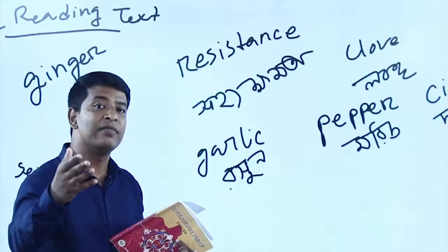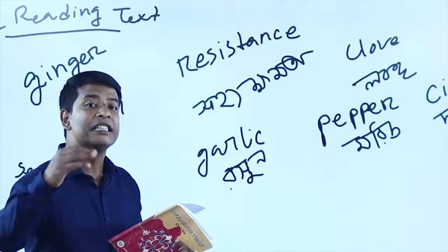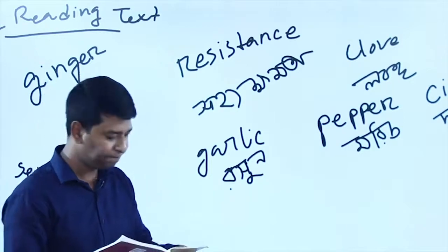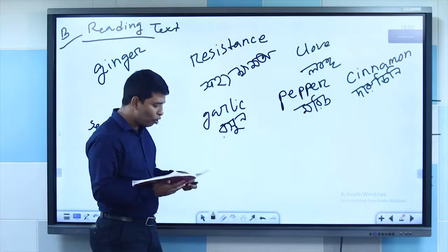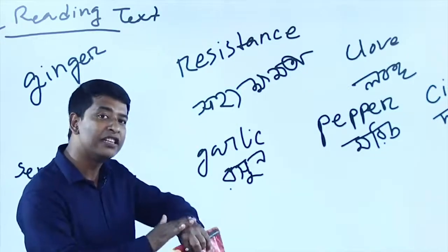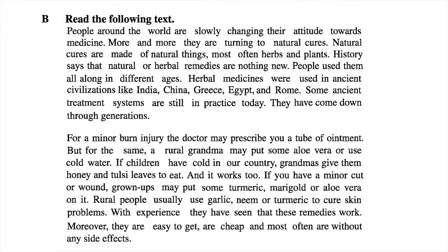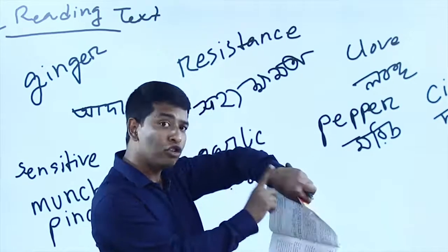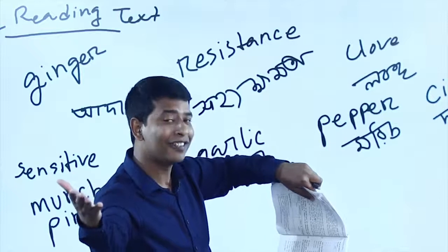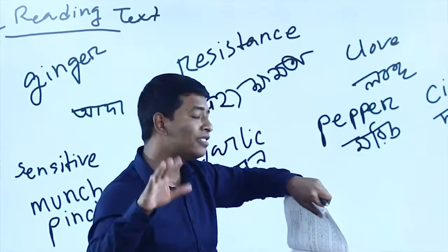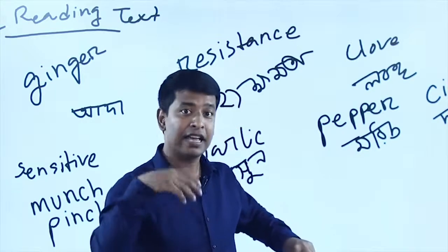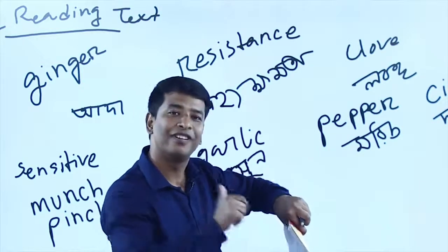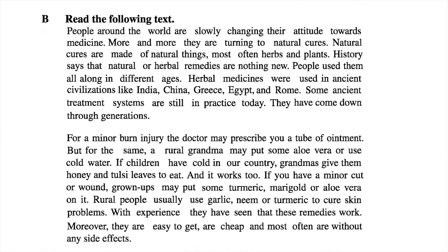Some ancient treatment systems are still in practice today. People are understanding that natural remedies are better than chemical remedies, so people are becoming more interested in natural remedies. Nowadays these remedies have come down through generations from various civilizations. For a minor or small burn or injury, a doctor may prescribe you a tube of ointment.